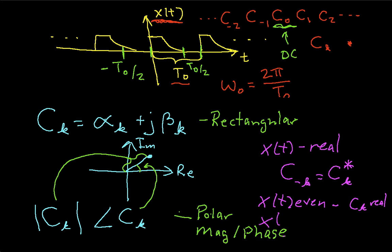If x of t is odd, then c sub k will be imaginary.